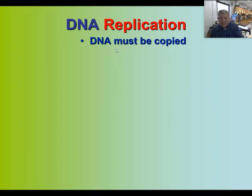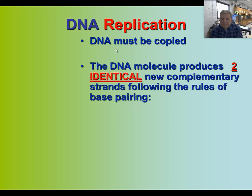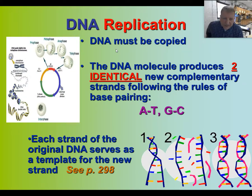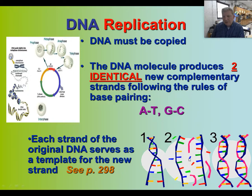DNA replication: DNA must be copied. In order to survive, your DNA has to duplicate. The DNA molecule produces two identical complementary strands following the rules of base pairing — A-T and C-G. Each strand of the original DNA serves as a template for the new strand. In step one, DNA is pulled apart; in step two, new base pairs are added, resulting in two identical strands of DNA.